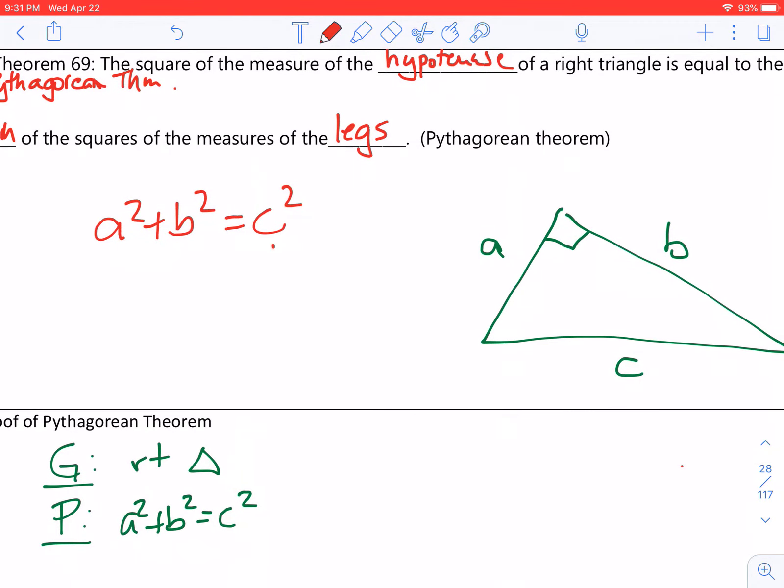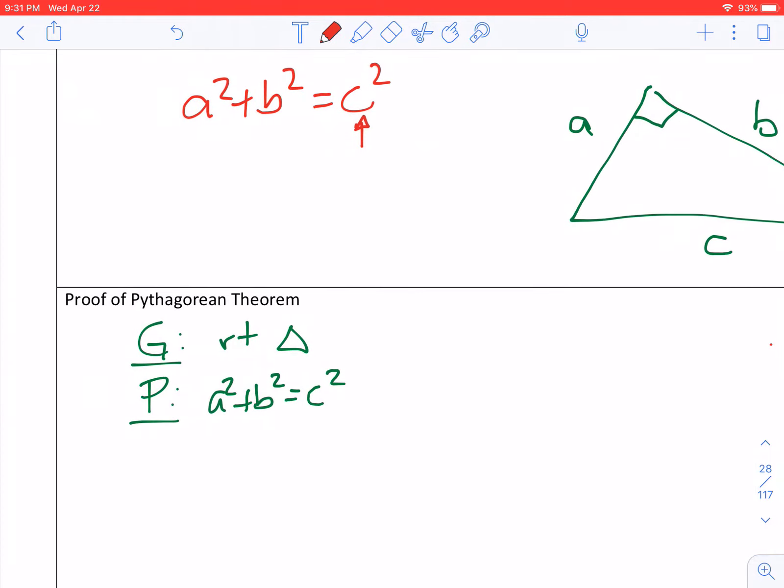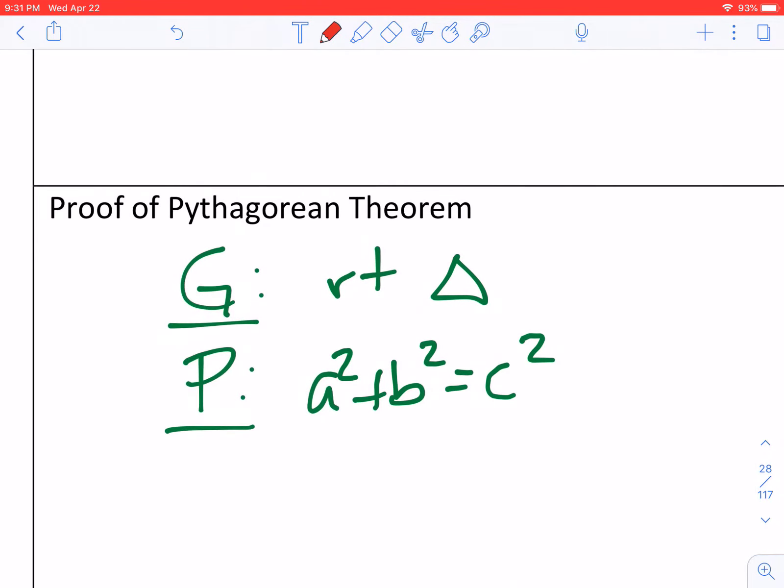Just a word of note, C is always the longest side. I'm going to sketch out a little bit of proof of the Pythagorean Theorem. There are many proofs of this.